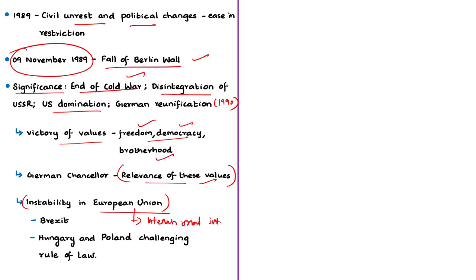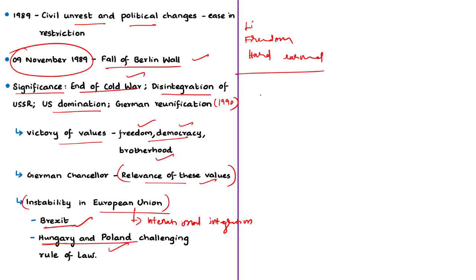Britain, one of the most important EU countries, is on the verge of exiting the European Union. The EU is also facing significant challenges including possible divisions in the future — for example, member countries such as Hungary and Poland were accused of challenging the rule of law. Democratic values such as liberty, freedom, and common brotherhood are hard-earned. Events like the fall of the Berlin Wall represent the people's hard work to achieve their rights, and these values should not be taken for granted.